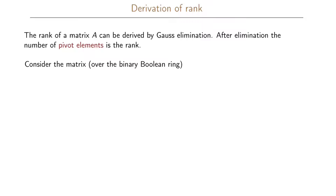To derive the rank of a matrix, we typically use Gaussian elimination. After performing Gaussian elimination, the number of pivot elements will be the rank of the matrix.